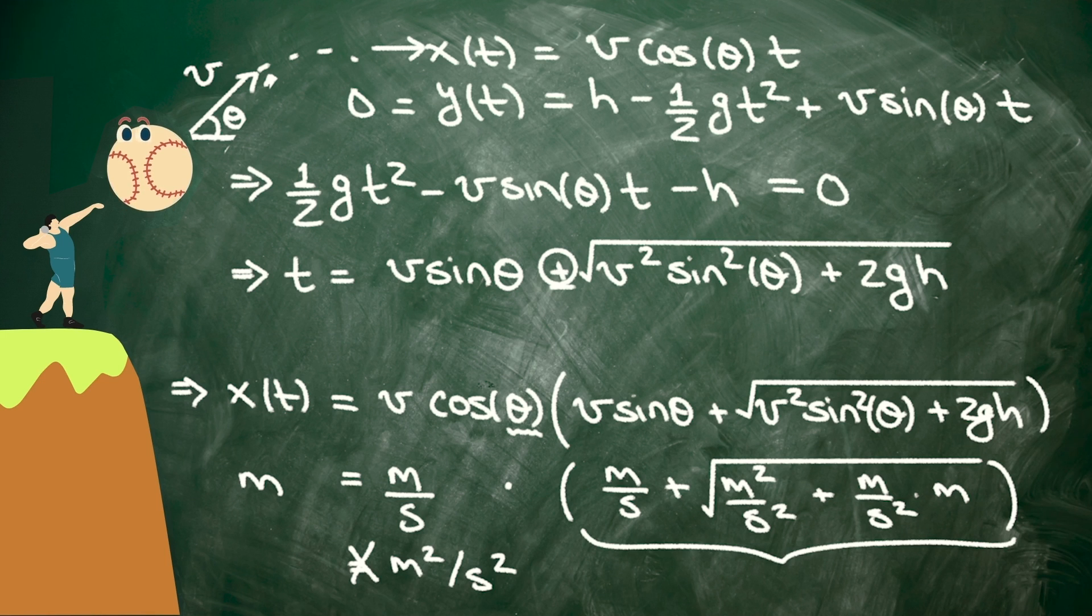This quantity in parentheses that has units of meters per second, that was supposed to be the time that it takes for the ball to hit the ground. So evidently, we must have messed something up when we wrote down our formula for t. We were supposed to get seconds, but instead we got meters per second.